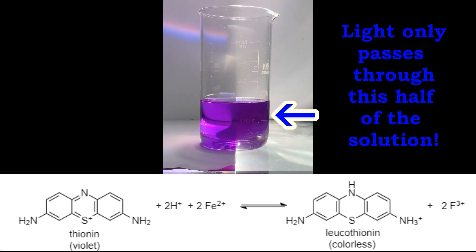In the presence of light, blue thionine dye reacts with iron 2 ions to form leukothionine dye, which is colorless. Iron 3 ions are also formed.